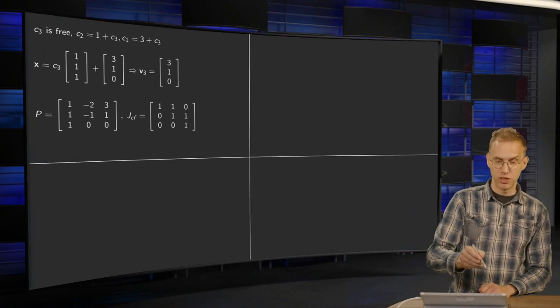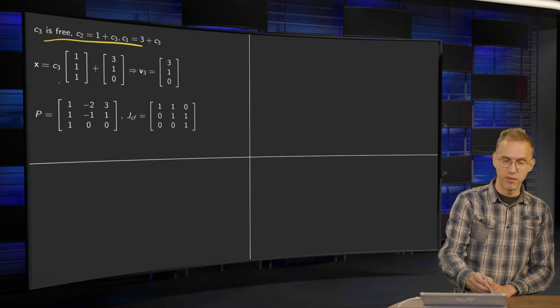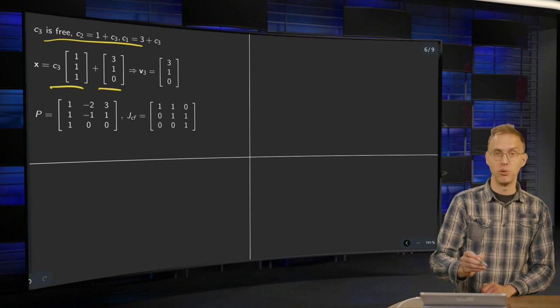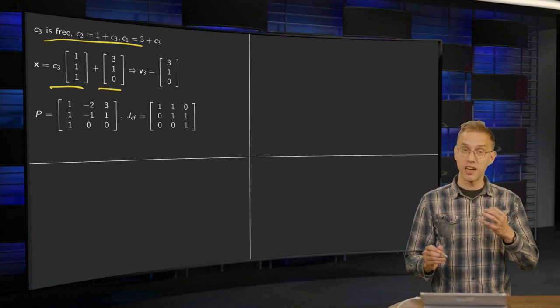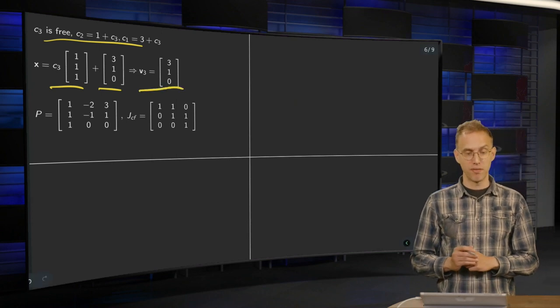So writing down the solution, write down the parametric vector form. So we get C3 times (1, 1, 1) plus a particular solution. And then, as our third generalized eigenvector, we can pick our particular solution. So there we have our V3.